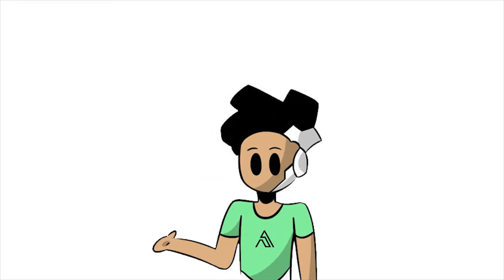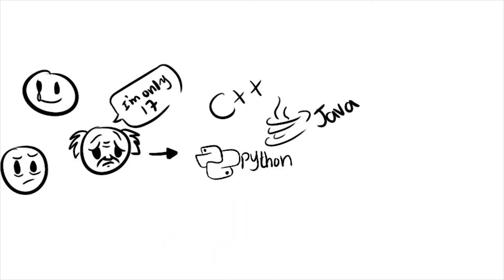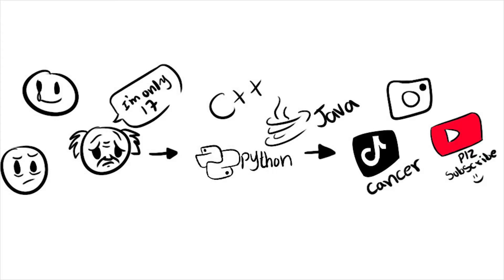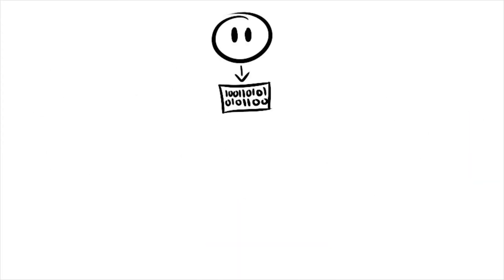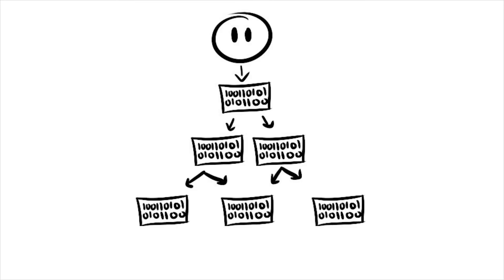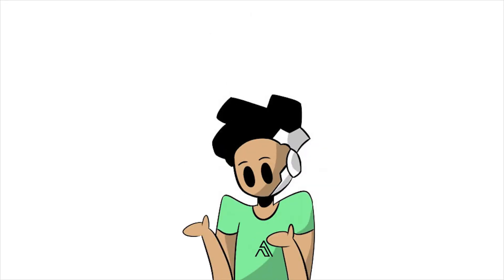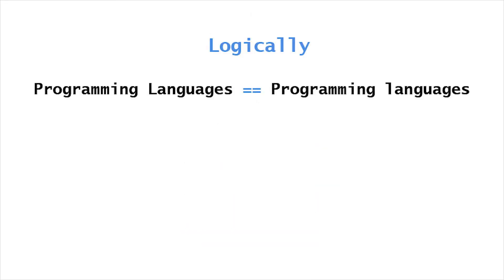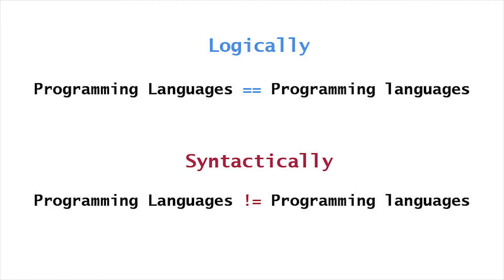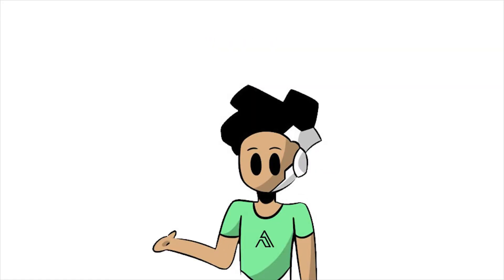Hello world. In programming, programmers use programming languages to write programs. For example, we can write a program that writes programs to program other programs. If you think about it logically, they're pretty much the same, but syntactically different. In other words, they're written differently.